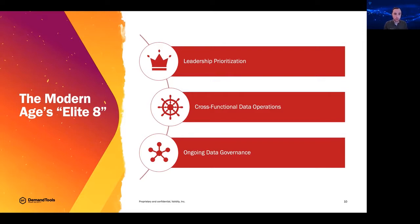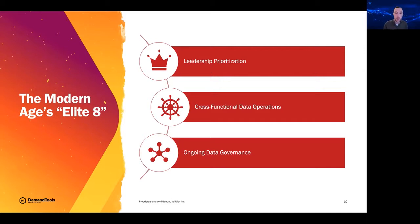The second concept is cross-functional data operations. Every business should have a data operations team that nurtures and maintains this incredibly important asset, working cross-functionally with all elements of the business — just as HR manages and maintains employees, it's the same concept for data. The third concept is ongoing data governance: setting the rules around how we use the data, where we capture it, and how long we keep it. Simply put, you get out of data what you put into it.